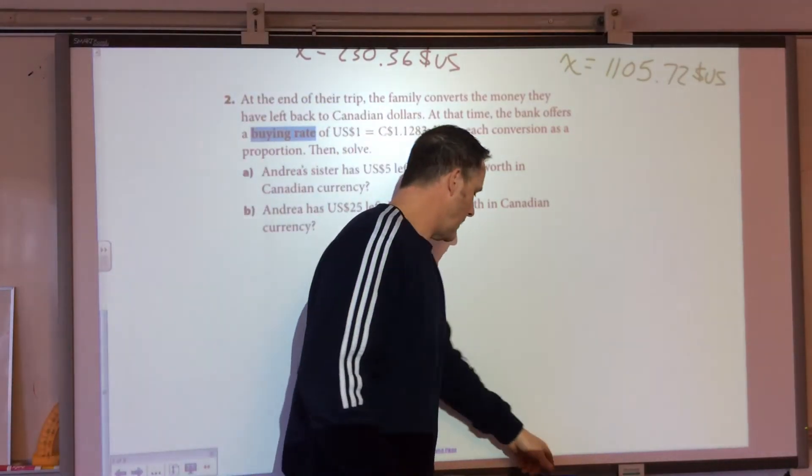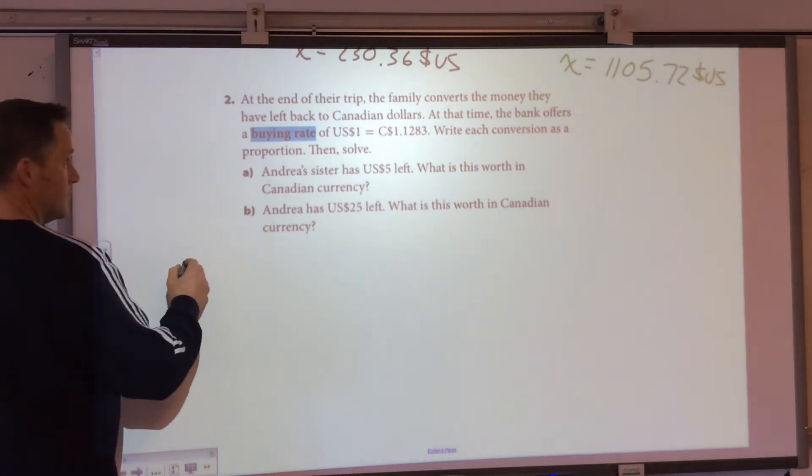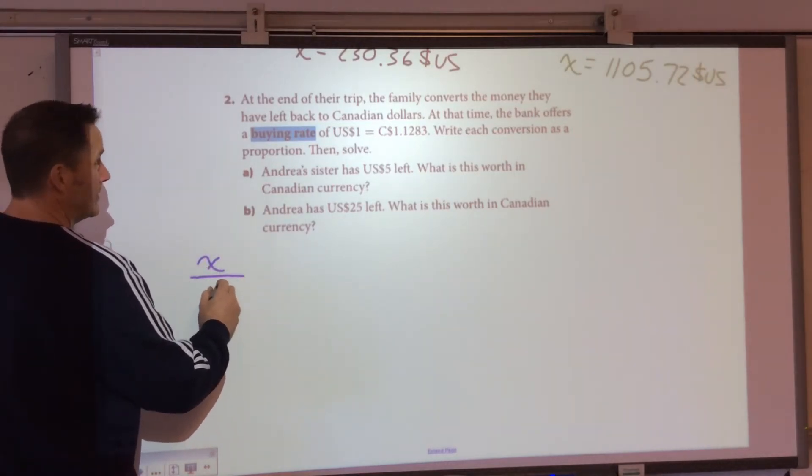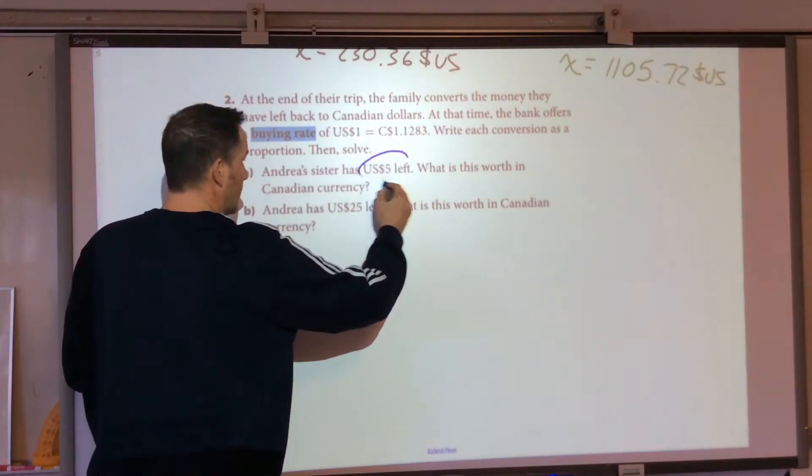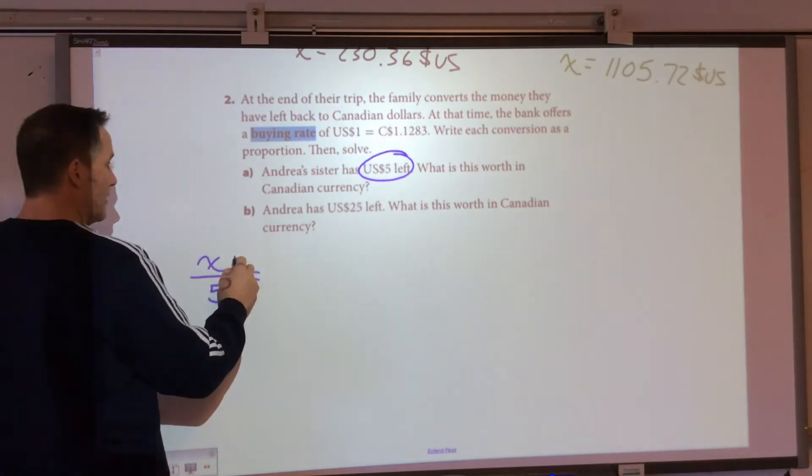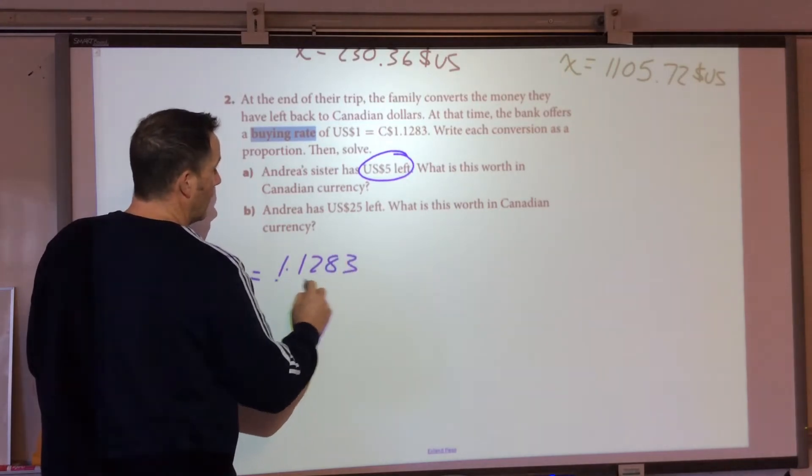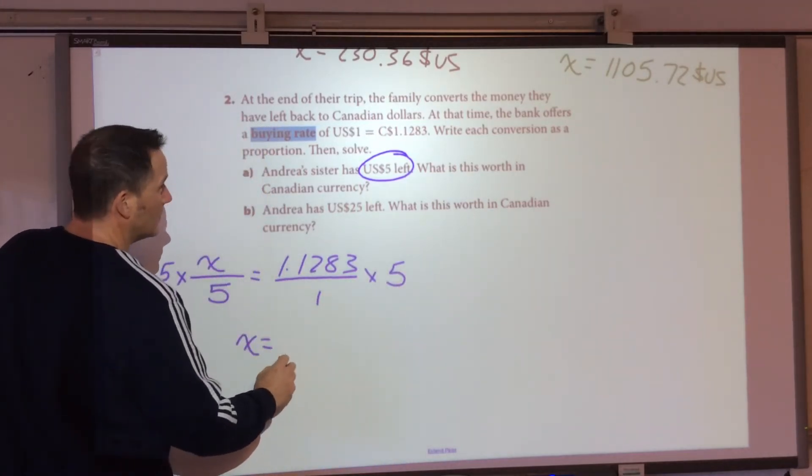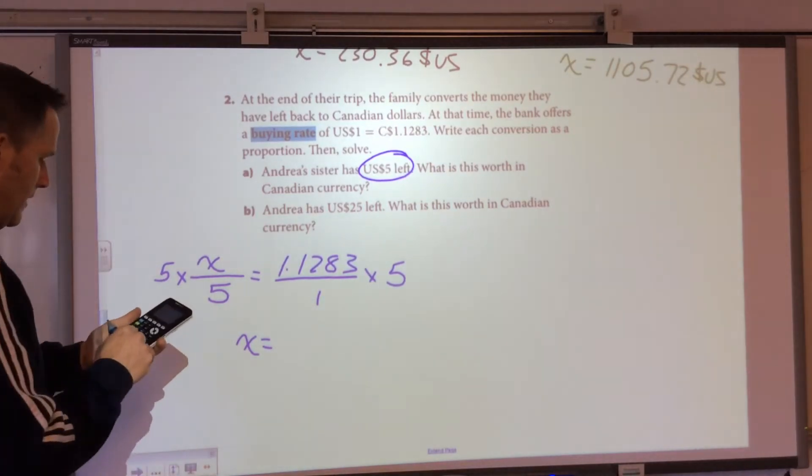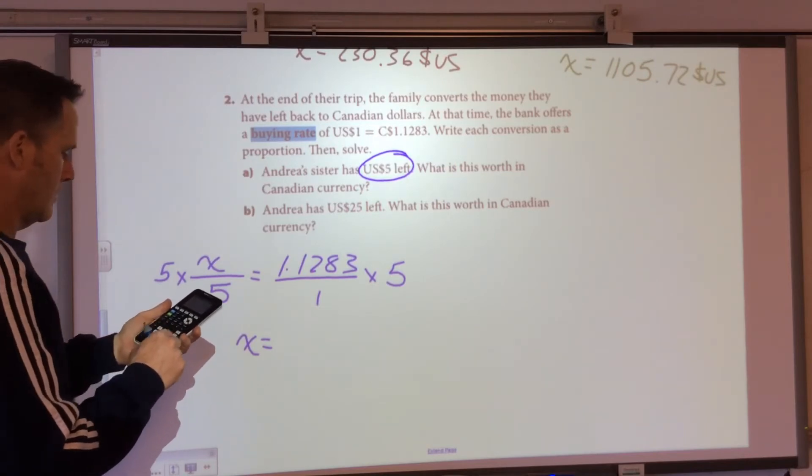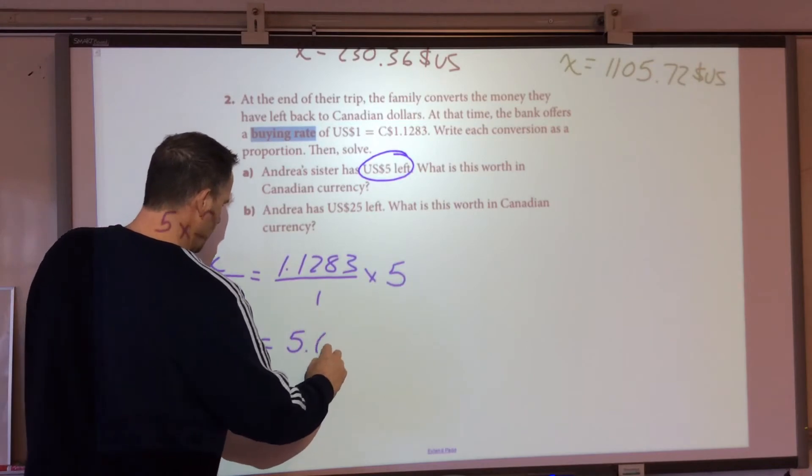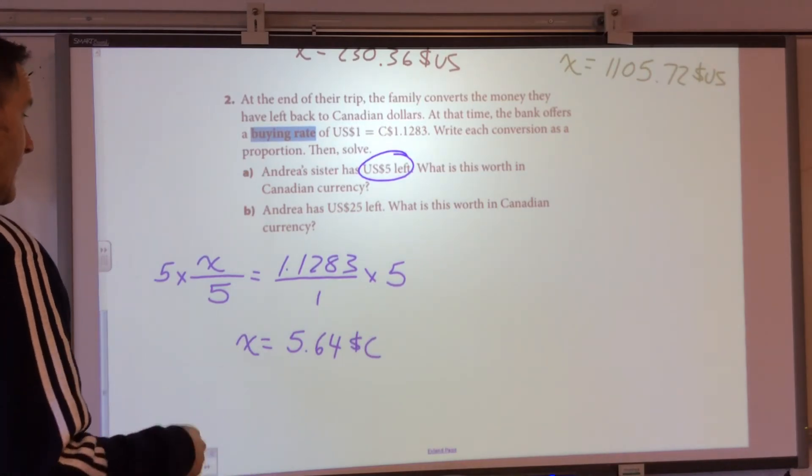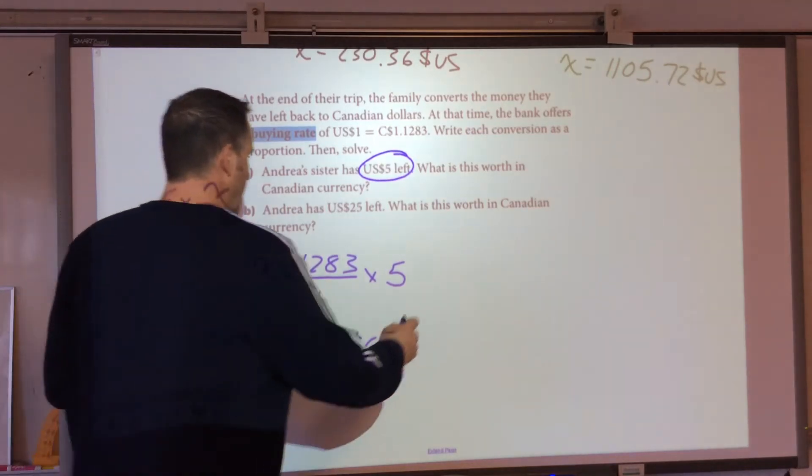Andrea's sister has $5 left. So, let's do it this way. We're going to want Canadian on top. So it's X over 5. We know that this is Canadian on top, 1.1283 over 1. So, I multiply by 5 times 5. X equals $5.64 Canadian. So that's how much Canadian money she has left, or gets back after the bank buys it from her.